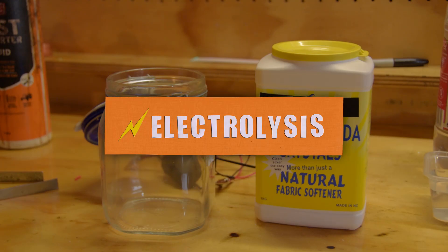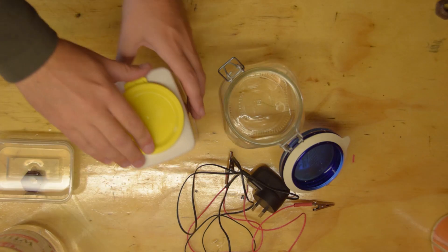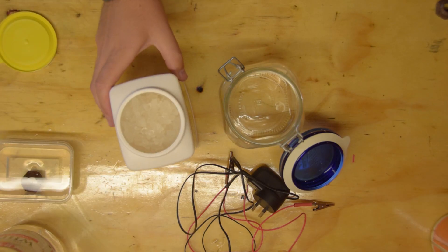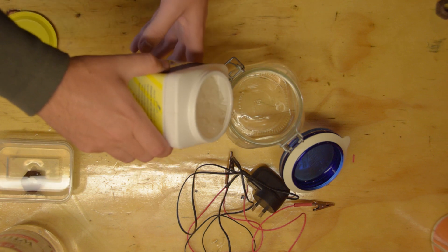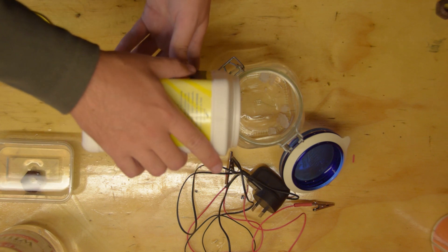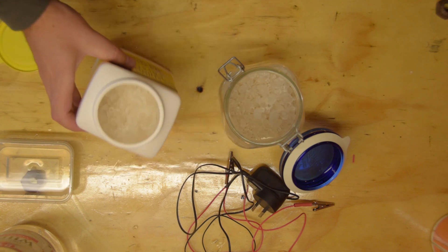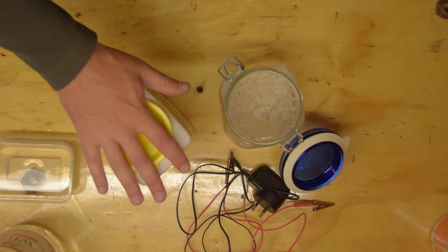Finally, electrolysis. Assuming you already have some sort of power supply, a glass jar and a couple of bits of steel. This is the cheapest method of rust removal. There is some extra setup time compared to the other methods and the part will need scrubbing afterwards.